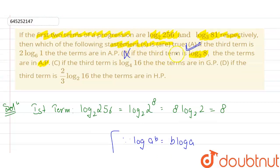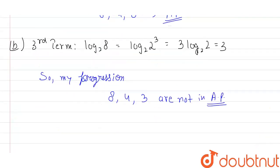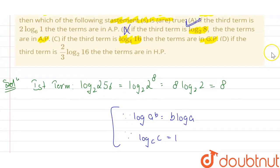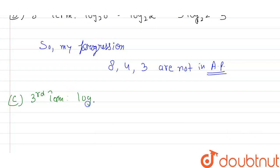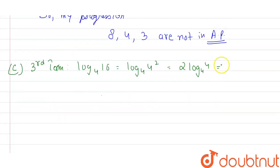Option C says: if the third term is log base 4 of 16, the terms are in GP. Log base 4 of 16 = log base 4 of 4² = 2·log base 4 of 4 = 2. So the third term is 2.